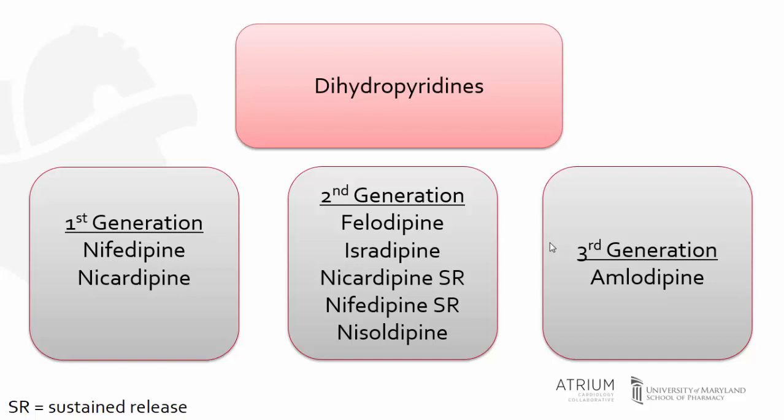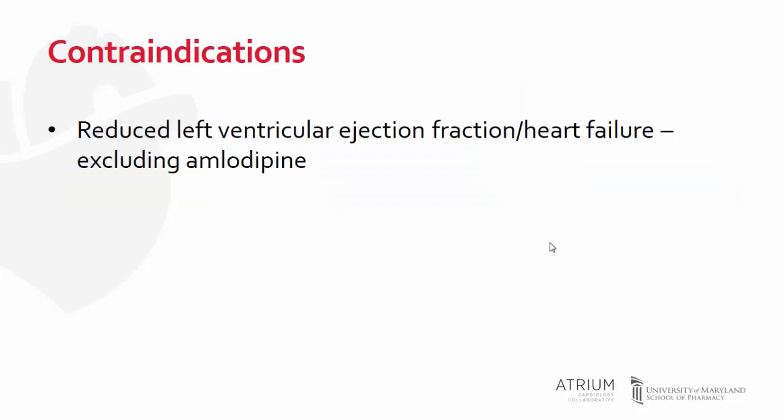On the contrary, second and third-generation dihydropyridine calcium channel blockers have a longer half-life and thus provide a more consistent, less rapid change in blood pressure. Contraindications for dihydropyridine calcium channel blockers include a reduced left ventricular ejection fraction. Of note, the exception to this is amlodipine, which has been shown not to worsen mortality. It doesn't improve mortality either, but it may be beneficial in patients who are already on goal-directed medical therapy yet remain hypertensive.